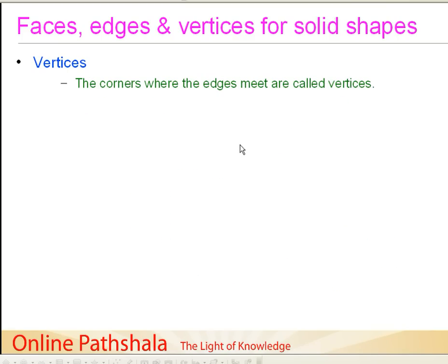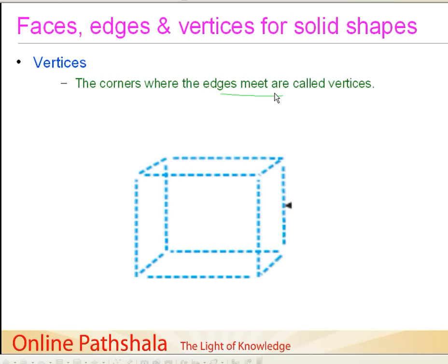Now let us understand what we mean by vertices. Vertices are the corners where the edges meet. Taking our cuboid example, we find the points where the edges are meeting — we have this point, this point, a point over here, a point over here, a point where three edges meet, another where three edges meet, and two more. So counting four on this side and four on the other side, we have eight vertices for the cuboid.